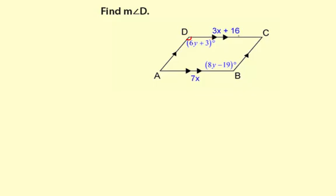Let's look at what other information we have. The other information related to angles is down here, this angle B, which is opposite to angle D, measures represented by 8y minus 19 degrees.